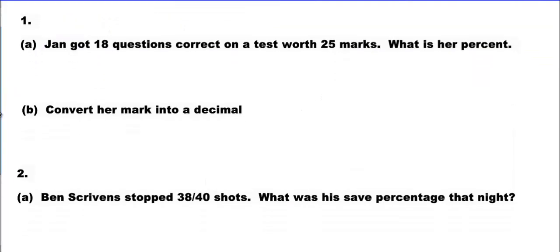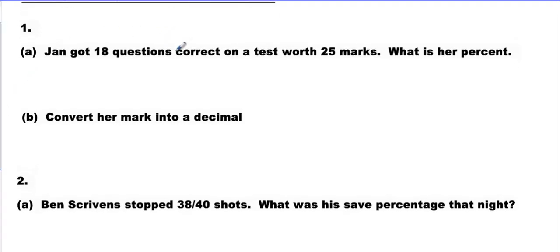Let's do a couple word problems and then call it a day. Jan had 18 questions correct on a test worth 25 marks. What is her percent? She got 18 and the total on the test was 25. What's her percent? That's not a hard question to do if you did the chart on the last page. Times by 4. Times by 4. You're going to get 100 on the bottom. What are you going to get on top? 4 times 8 is 32. Carry the 3. 72 out of 100, which is 72%. Convert her mark into a decimal. That's not that bad, right? Life is good. You just move the decimal back twice. You get decimal 0.72.